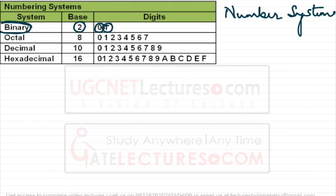Those two digits are 0 and 1, therefore the base of binary system is 2. In human mathematics we use the decimal system. The decimal system has base 10 because we are using 10 unique symbols.